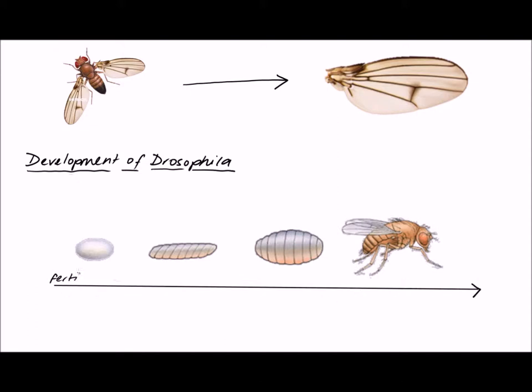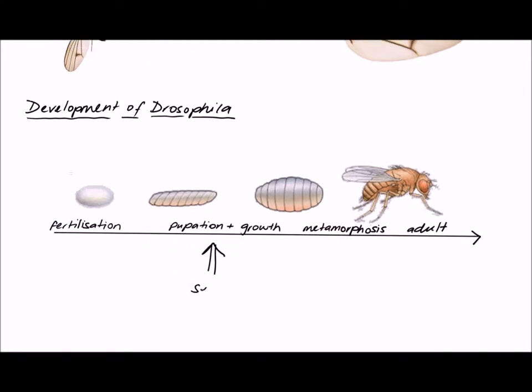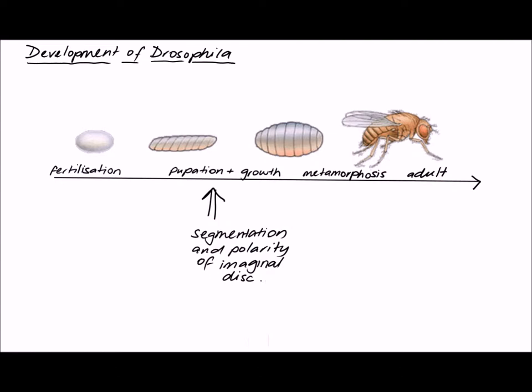The mechanism of wing pattern formation through segmentation and polarization primarily occurs in the earliest stages of development, specifically during pupation and growth. This patterning mechanism occurs in the wing imaginal disc, a sack of cells that will eventually form the wing of the Drosophila.